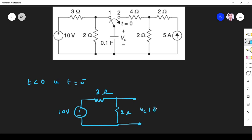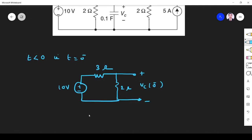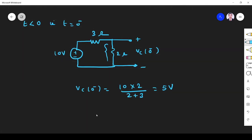What is Vc(0-)? Voltage across the capacitor is voltage across the 2 ohm resistor, so Vc(0-) equals, applying voltage divider rule, 10 times 2 divided by 2 plus 3.